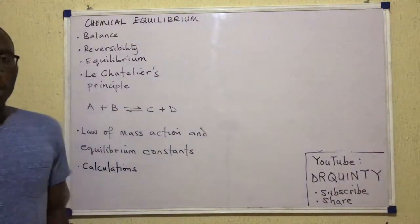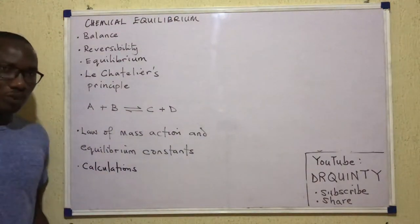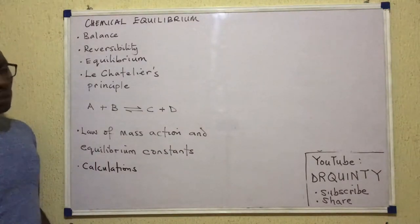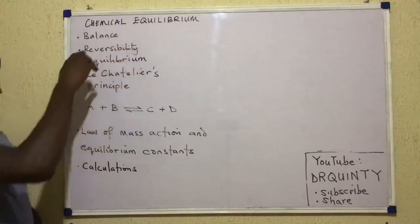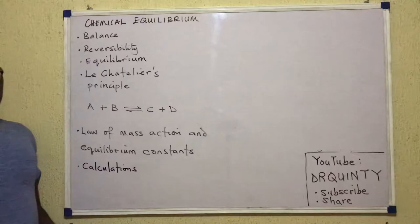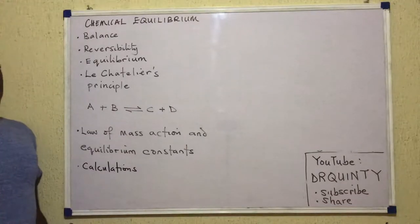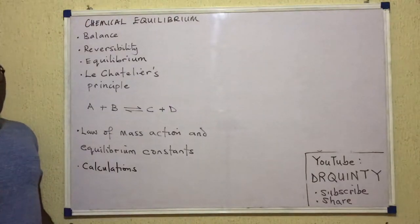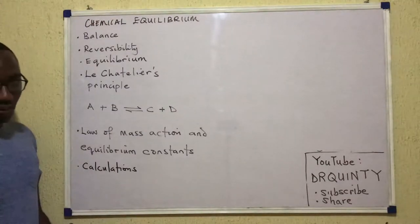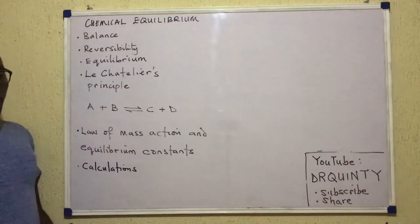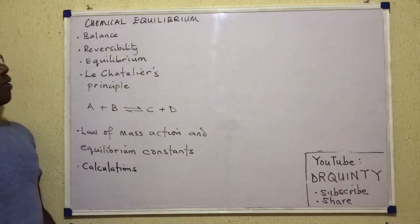Hello. In this video, we'll be talking about chemical equilibrium. Now, equilibrium basically means balance. And in physics, you must have learned about two types of equilibrium called static and dynamic equilibrium. So, chemical equilibrium is a type of dynamic equilibrium.